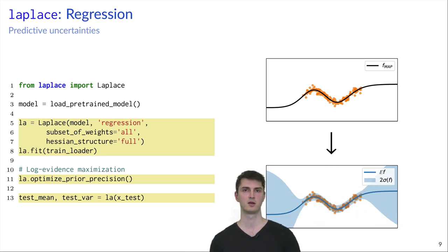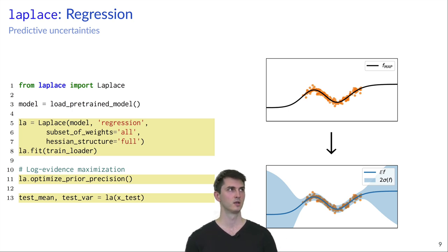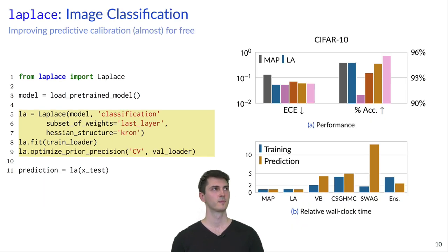Now that you've seen options that are available in the library, I want to go through some brief examples of how it can be applied in practice. The first one is a simple regression task. Here the model is very small, so we can choose all weights and use the full Hessian approximation. Then just adding a few lines of code, we get the predictive variance returned as well, which you can see in the figure.